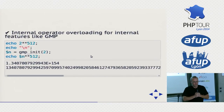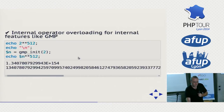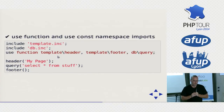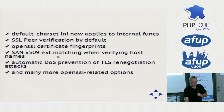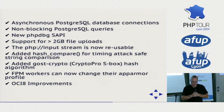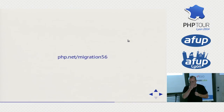We have internal operator overloading for features like GMP — you can now do GMP_init and use operators directly on it. This is internal operator overloading only; other extensions will hopefully start using it too. We have a use function so you can now import functions and constants into namespaces. And a bunch of SSL-related fixes because OpenSSL has been interesting for the past year or so — we've really had a look at our OpenSSL integration, and there's a lot that has been beefed up. You can also do asynchronous Postgres queries now, just like with MySQL. Support for greater than two gigabyte file uploads. Read the migration document for PHP 5.6.